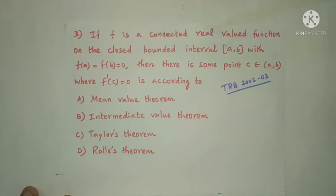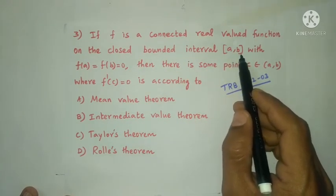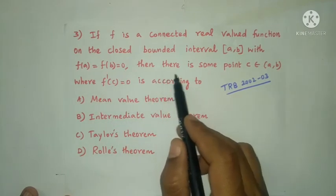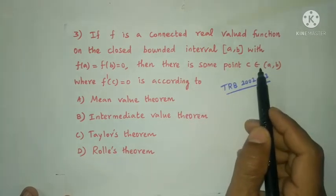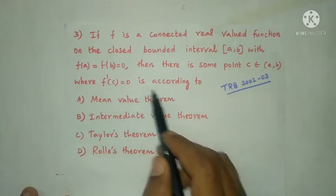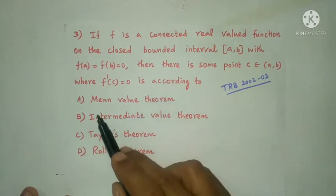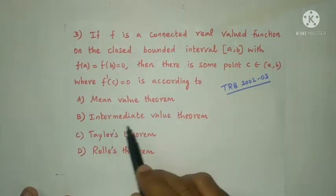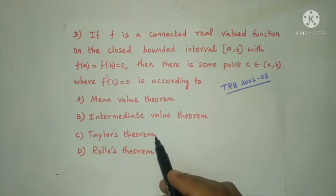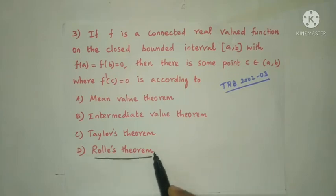Next question: if f is a continuous real valued function on the closed bounded interval [a, b] with f(a) = f(b) = 0, then there is some point c belonging to the open interval (a, b) where f'(c) = 0 — this is according to which theorem? The options include mean value theorem, intermediate value theorem, Thales' theorem, and Rolle's theorem. The answer is option D: Rolle's theorem.